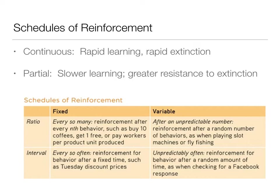A fixed ratio schedule means you get reinforced after a set number of behaviors — like punch cards where every five punches earns you a free coffee or burrito. A fixed interval schedule means you get reinforced after a set amount of time — like getting a $5 gift card every month for being in a rewards program.